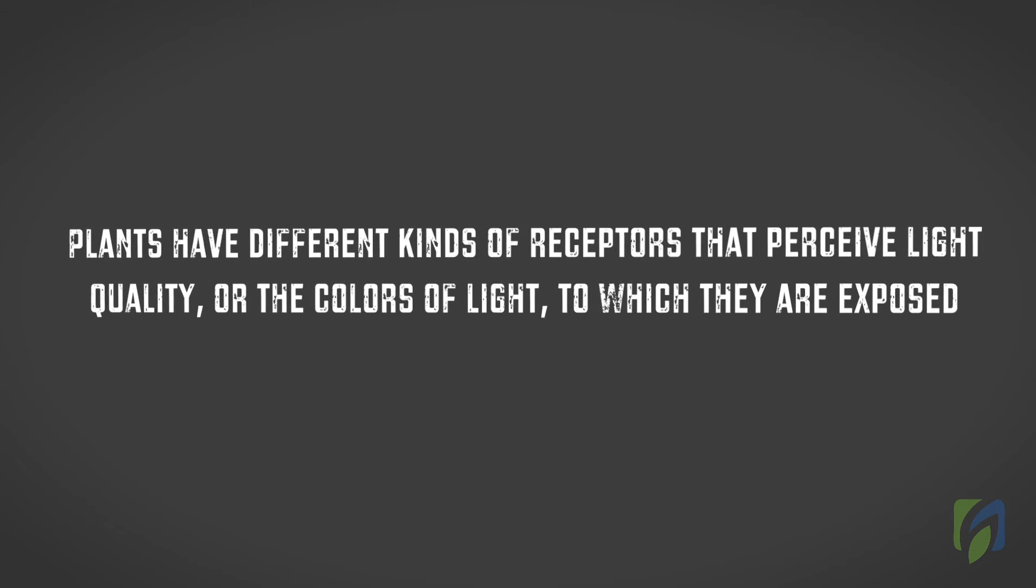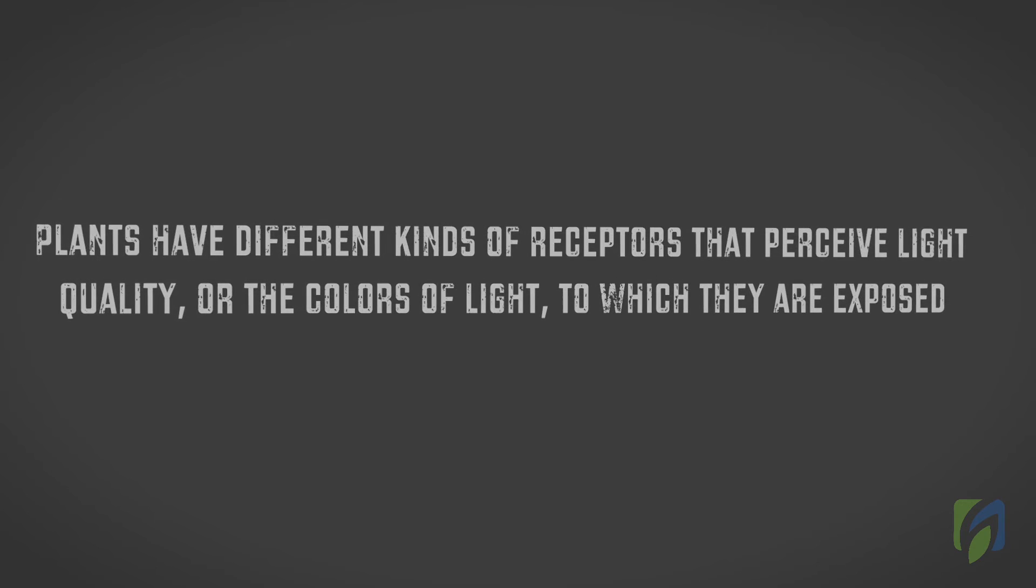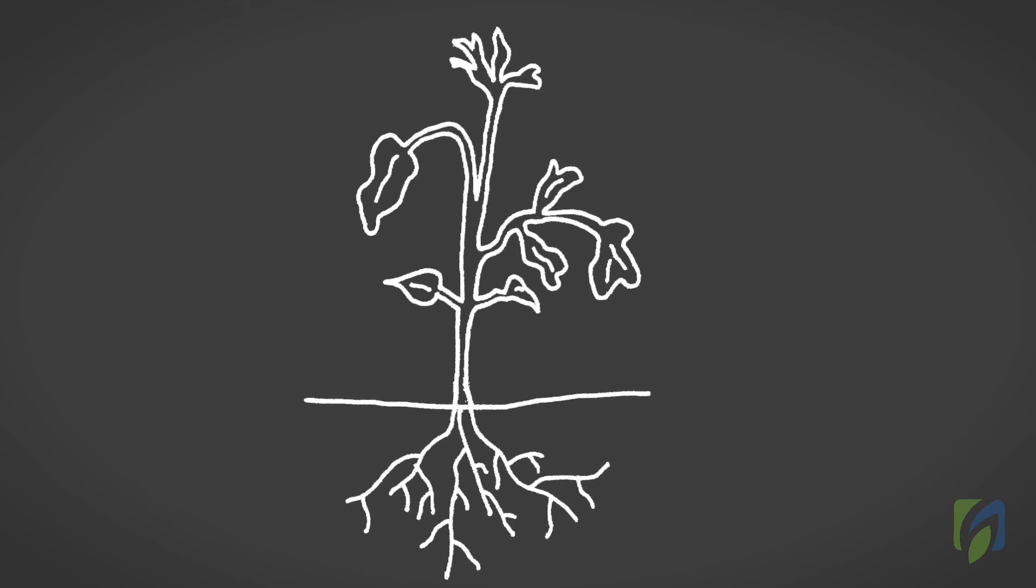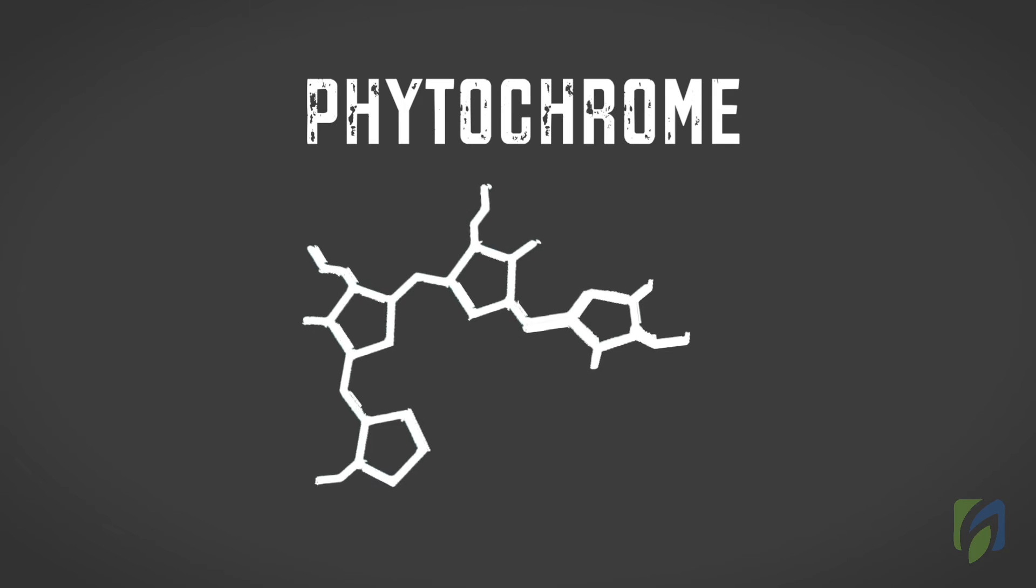Plants have different kinds of receptors that perceive light quality, or the colors of light, to which they are exposed. One of these receptors is phytochrome, which is sensitive to the amount of red light relative to the amount of far red light.